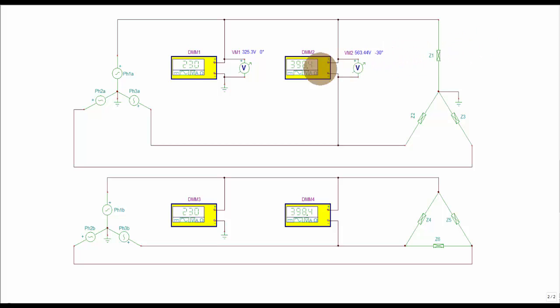We'll then be moving on to using the Tina simulator. Now you can download an evaluation or a student version of that simulator and in particular this analysis we'll be looking at star generators and here we have a star load, here we have a star generator and here we have a delta load and we'll be examining the phase voltages and line voltages in each of those systems.